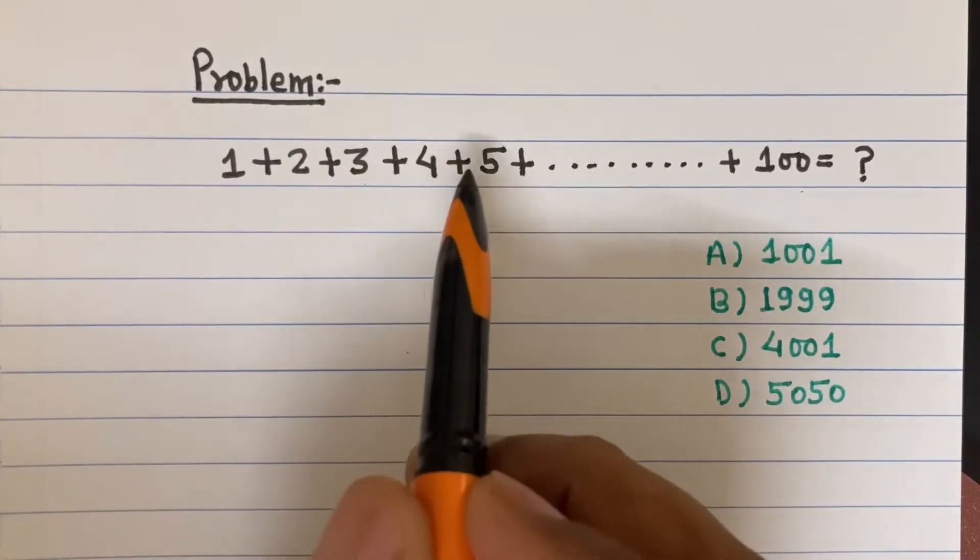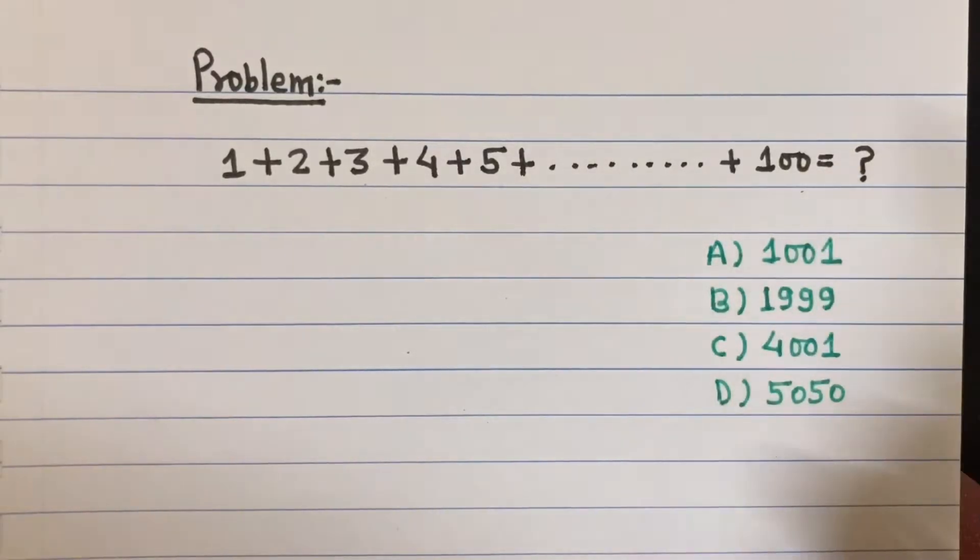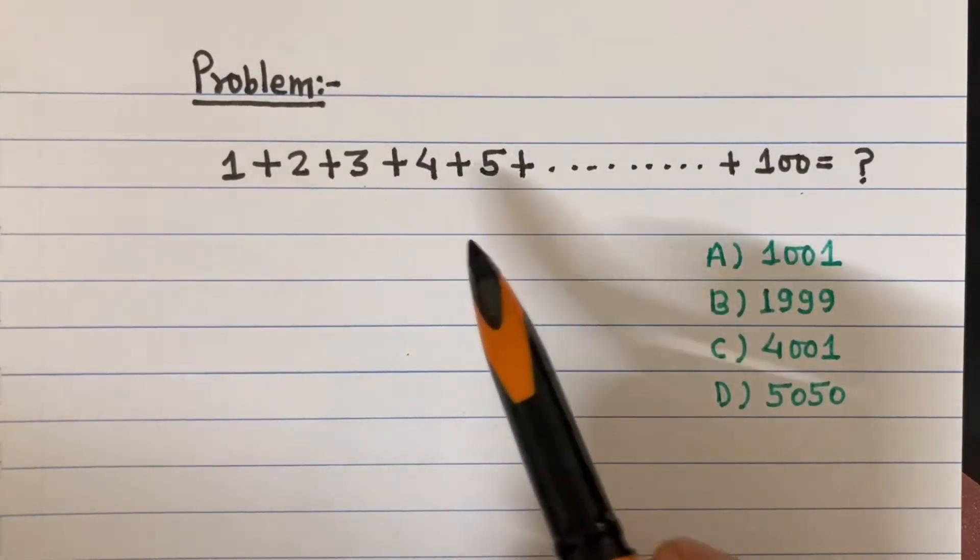1 plus 2 plus 3 plus 4 plus 5, dot dot dot, plus up to 100 equals what? This problem is actually a lot easier than you might think.